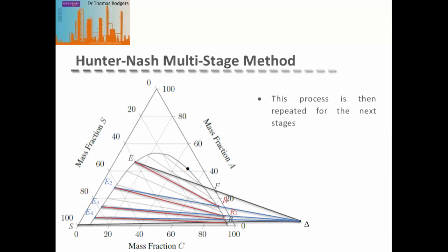For this process, four equilibrium stages are needed to generate the required purity of the raffinate product.